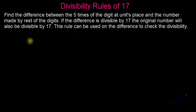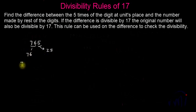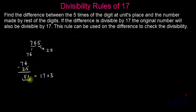The first number I am going to take is 765. We take the units digit 5; five fives are 25, and the number made by the rest of the digits is 76. Finding the difference: 76 minus 25 gives us 51. Now, 51 is 17 multiplied by 3, so 51 is divisible by 17, and that is why 765 will also be divisible by 17.